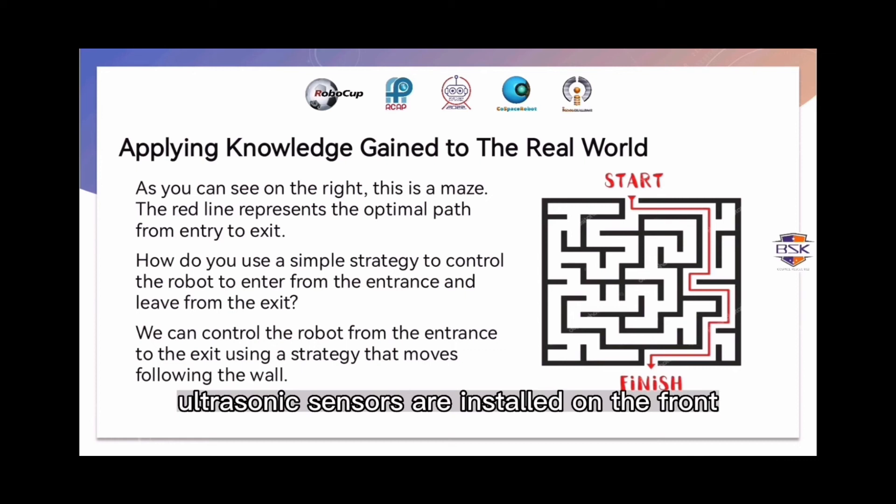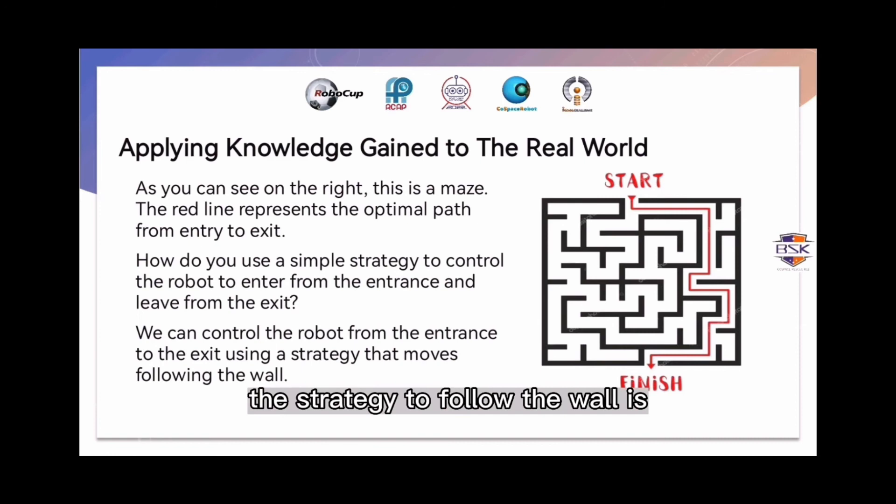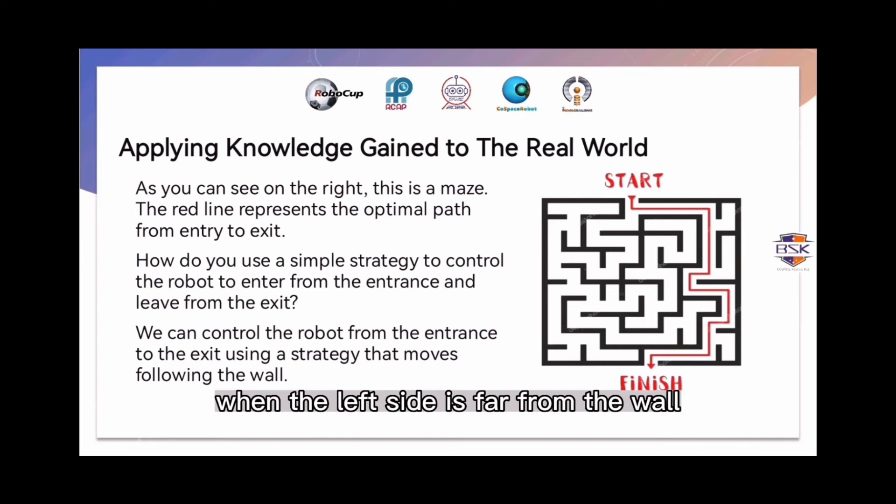For example, ultrasonic sensors are installed on the front and left side of the robot to detect the wall. The strategy to follow the wall is the robot turns left from the entrance into the maze. When the left side is far from the wall, the robot turns left. When the left side is closer to the wall, the robot turns right. When the front and left of the robot are close to the wall, the robot turns 90 degrees to the right.